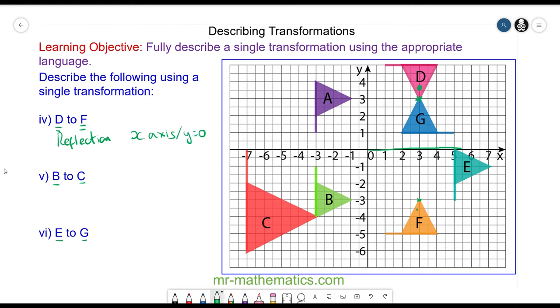So transforming shape B onto shape C. Well in this case B and C are similar so it will be an enlargement. And the scale factor. Well the length of the pole in B is 3 and in C the length is 6. So the scale factor will be 2 because 3 times 2 makes 6.